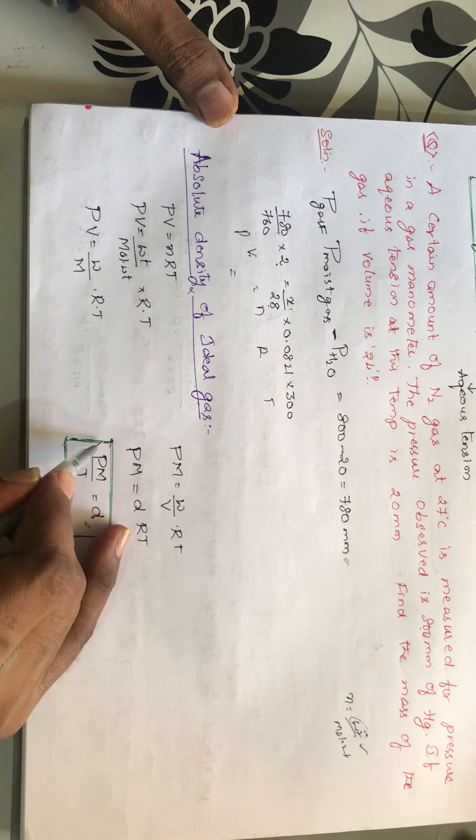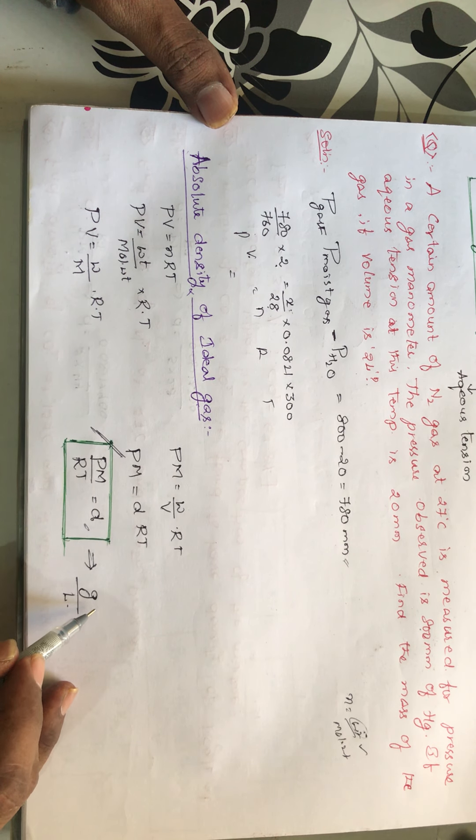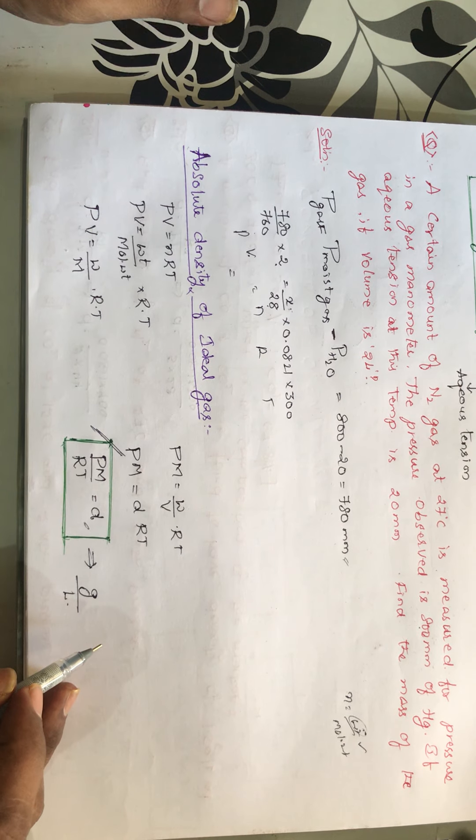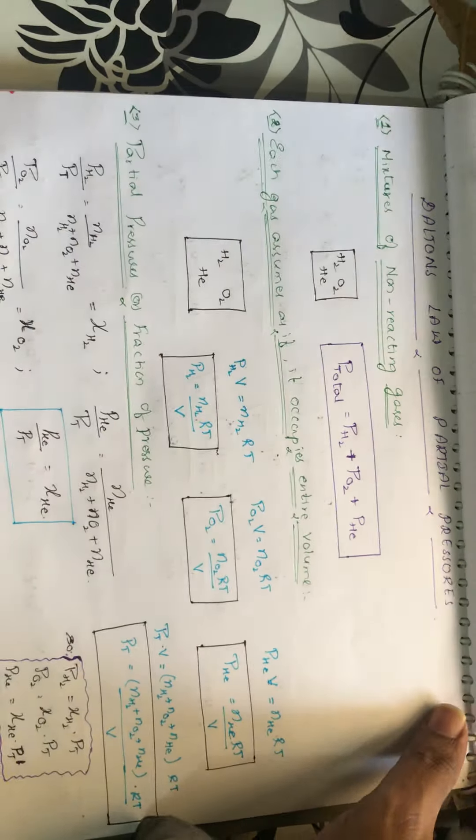So in this way, this is the most important one. Density of the gas equals PM by RT. And whatever the value you will be getting, it is you will be getting in terms of grams per liters. So let us do some two problems with respect to this.